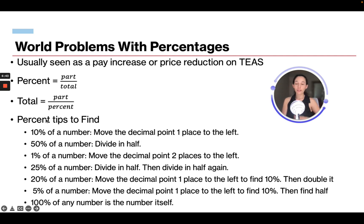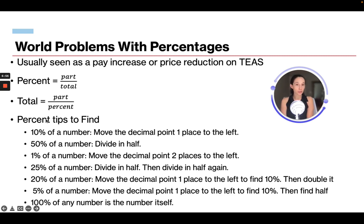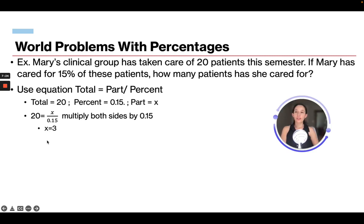To find 5% of a number, move the decimal one place to the left to find 10%, then divide it in half. So 5% of 50: moving the decimal gives 5 (which is 10%), then half is 2.5. And 100% of any number is itself, so 100% of 50 is 50.